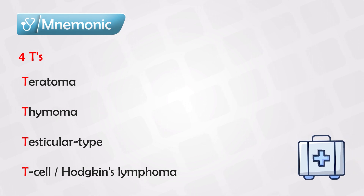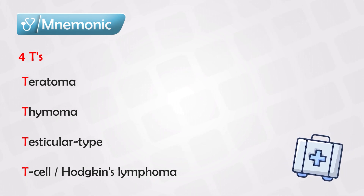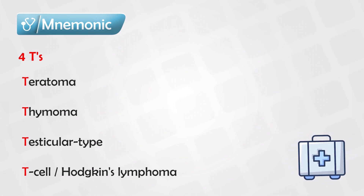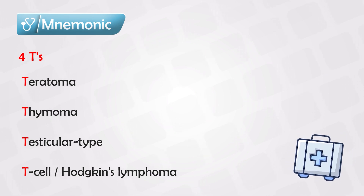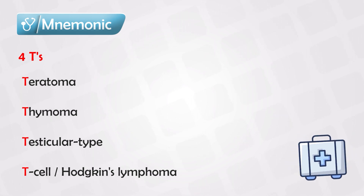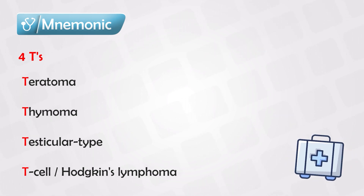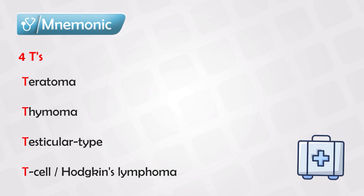These anterior mediastinal tumors are most likely incidentally found. The patient is unlikely to complain of something in the anterior mediastinum. So if you see a mass in this area, think of the four T's.